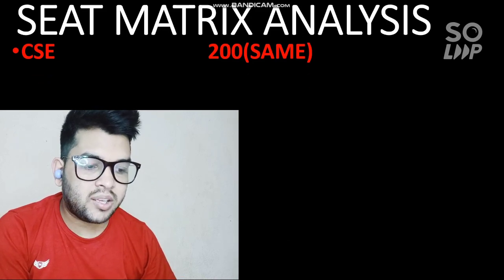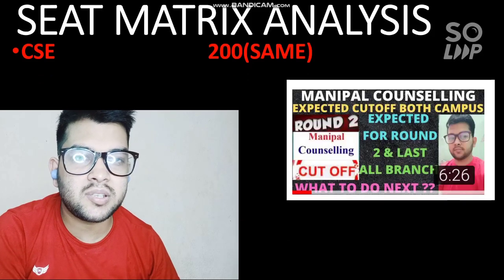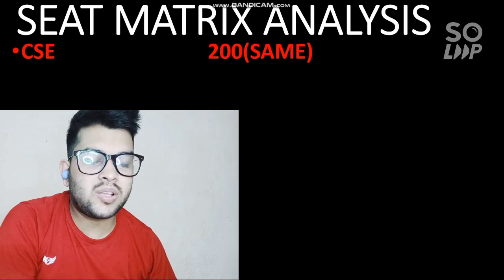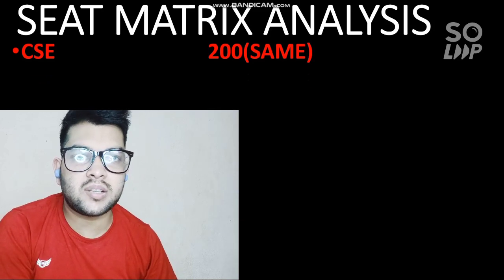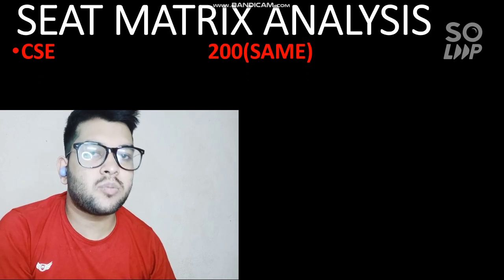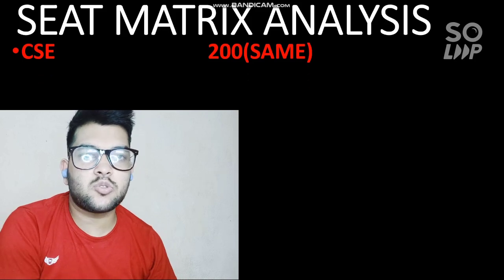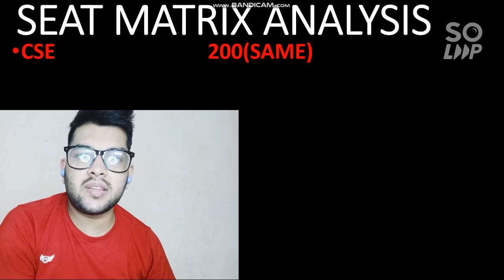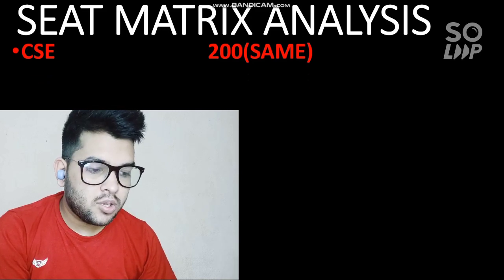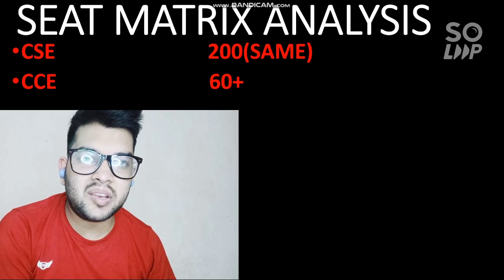I have already uploaded a video with the expected cutoff for this year — for round two as well as what the cutoff will be till the last round. You can check that video via the eye button or in the description box. In that video I have considered all the differences in the seat matrix from 2020 to 2021. Here, for CC (Computer and Communication Engineering), 60 plus 60 seats have been increased from 2020 to 2021.